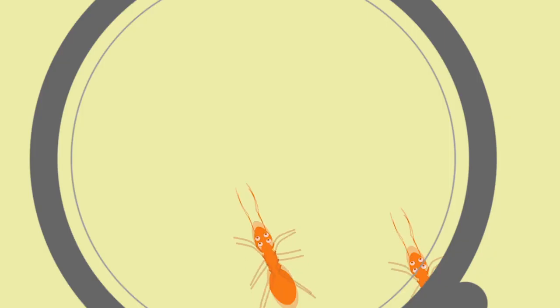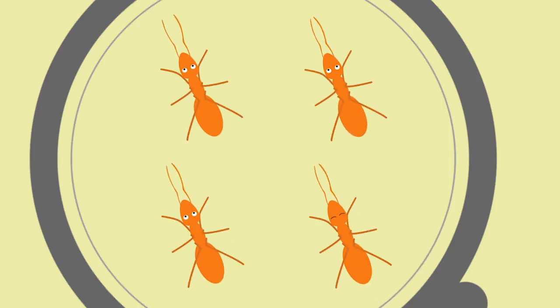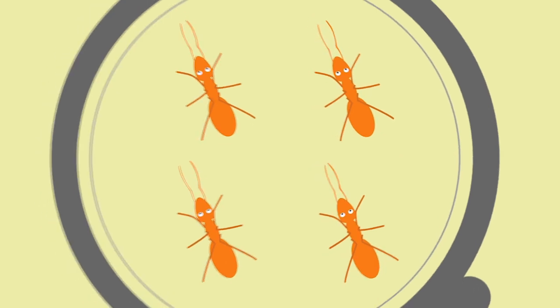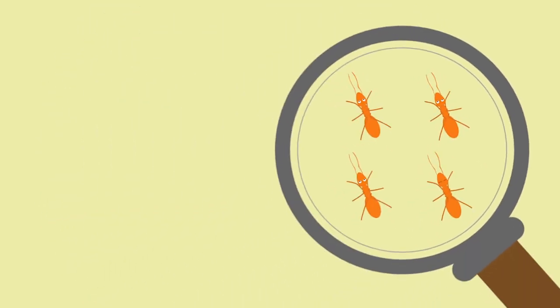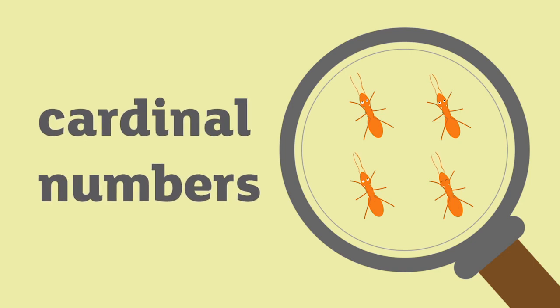There are three types of numbers. Some numbers tell us about the size of a group, for example four ants. These are whole numbers that are used for counting. They are known as cardinal numbers.